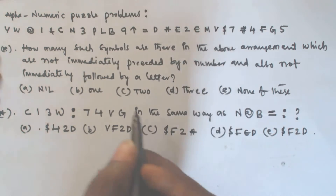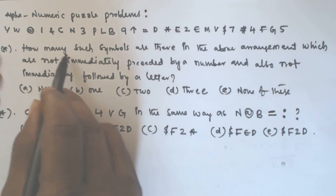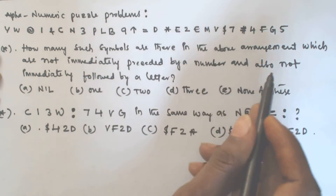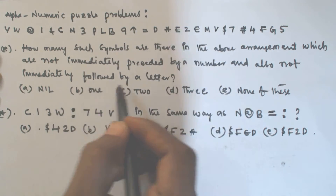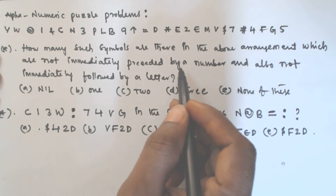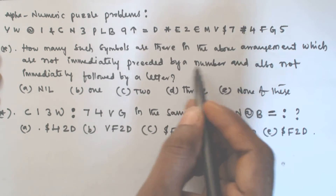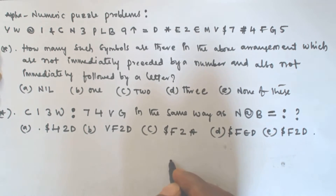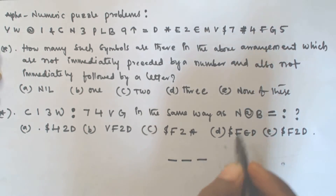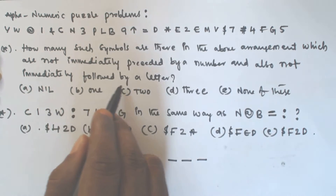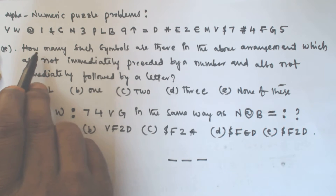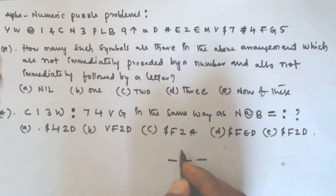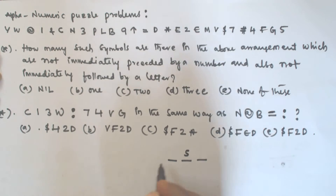So we have to solve these two questions. For question 1 — how many such symbols in the above arrangement are not immediately preceded by a number — that means we are looking at a group of three terms, and those symbols must not be preceded by a number and not immediately followed by a letter.